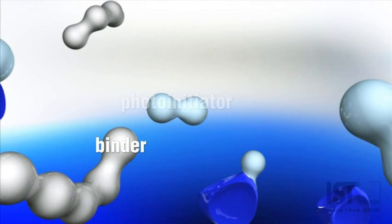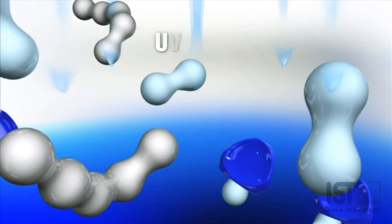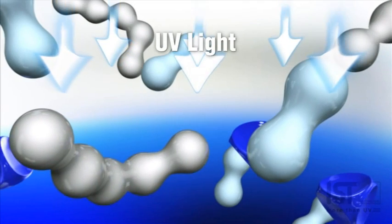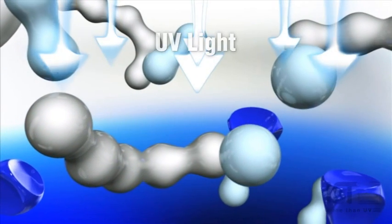This polymerization is triggered by the action of UV energy on ink or varnish. During this process, the photo-initiators contained in the ink or varnish are converted to free radicals.